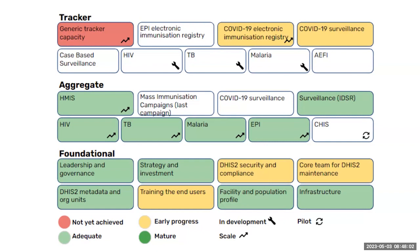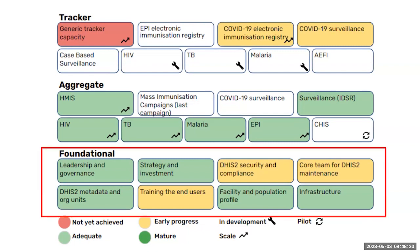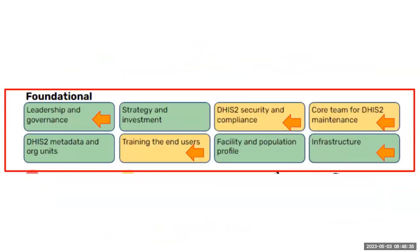This is a list of questions that gives you an indication of how things are going — for example, how is DHIS2 security and compliance in a given country? Is everything in place? Do they have the people, tools, and processes to handle security and privacy, or are there areas for improvement? We should really focus on these foundational pieces. We will talk about leadership and governance, training and capacity building, security and compliance, the core team, and infrastructure later in the course.